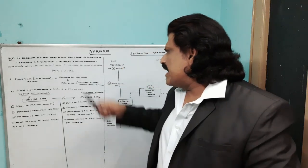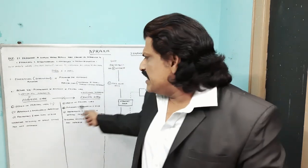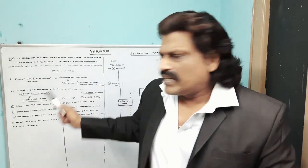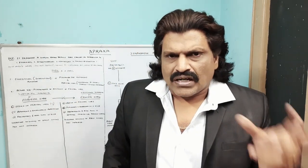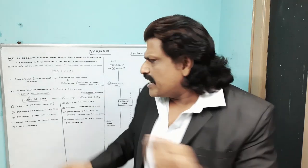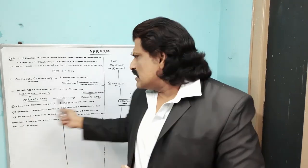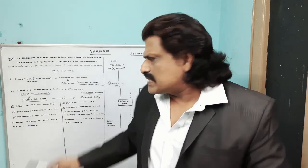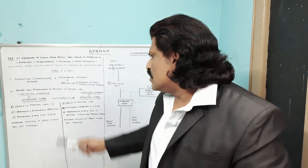Now let's come to ideational apraxia. In ideational apraxia, the lesion is in the frontal lobe or the parieto-frontal connections. So whatever the parietal lobe has planned, it is not able to transmit the information to the frontal lobe for the actual performance of the movement. In ideational apraxia, the lesion is in the parieto-frontal connections or the frontal lobe.